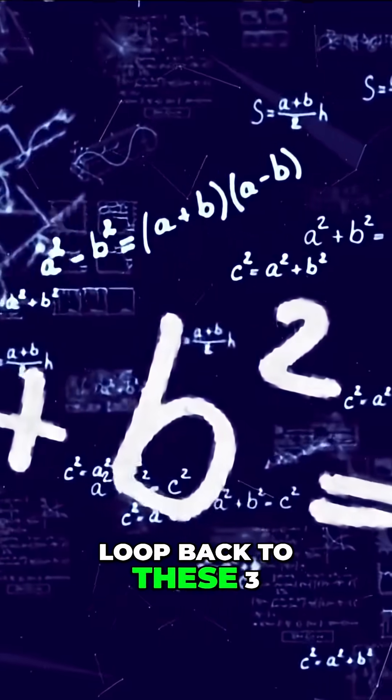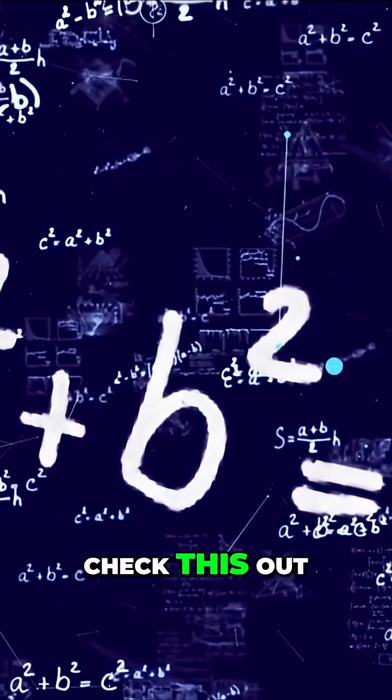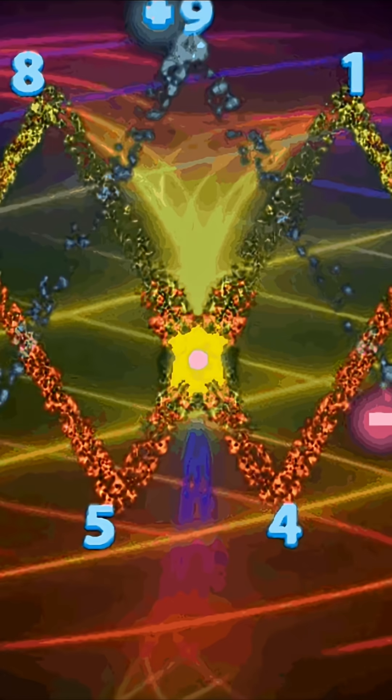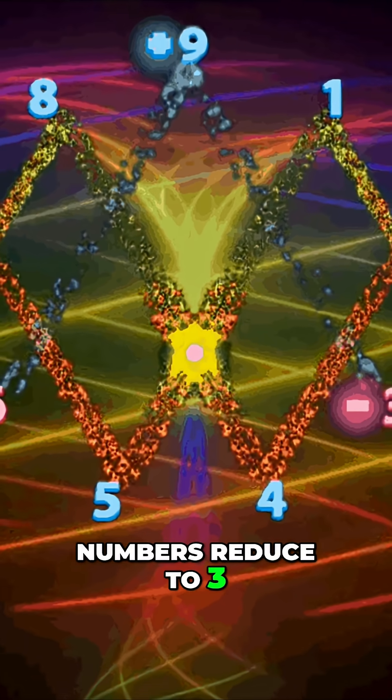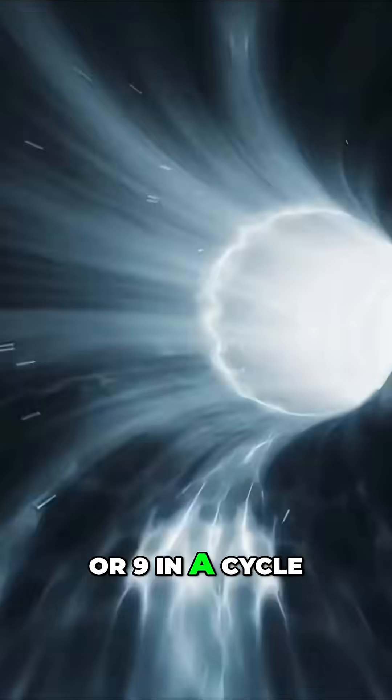They're tied to vortex math, a pattern where numbers loop back to these three. Check this out. See that? Numbers reduce to 3, 6, or 9 in a cycle.